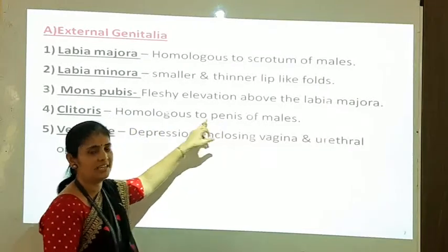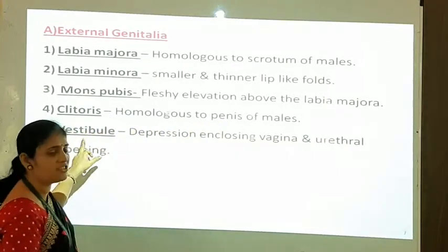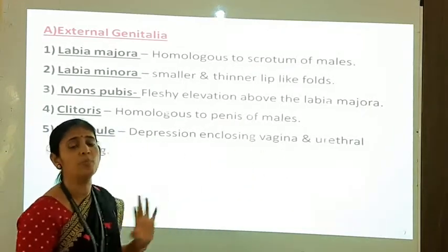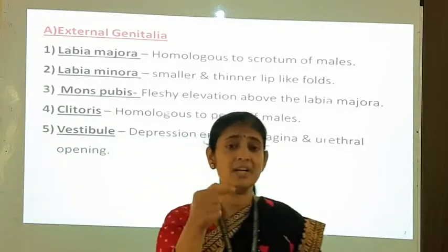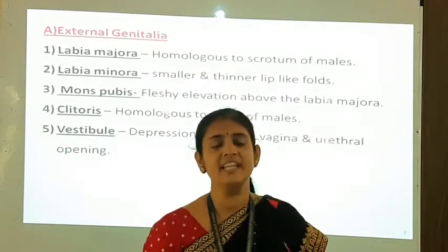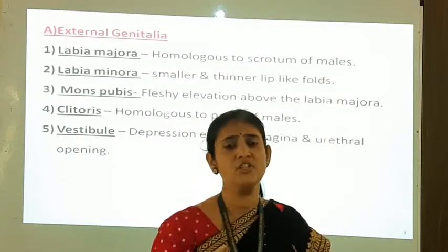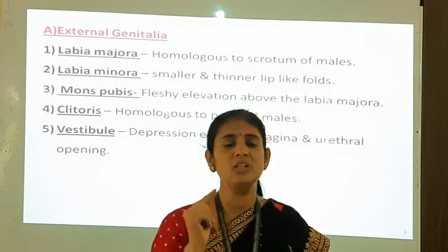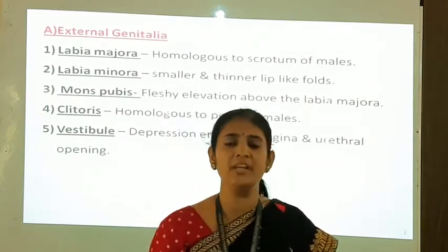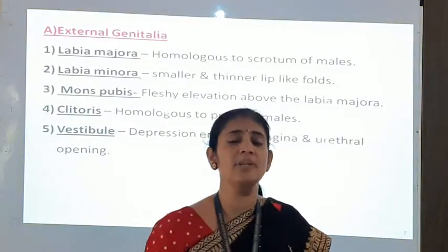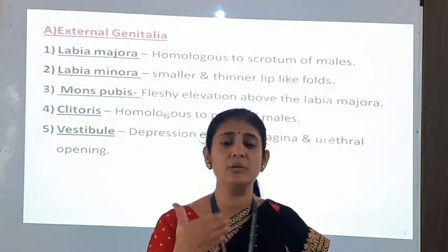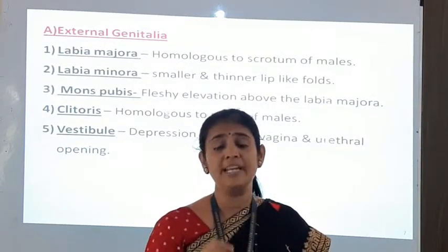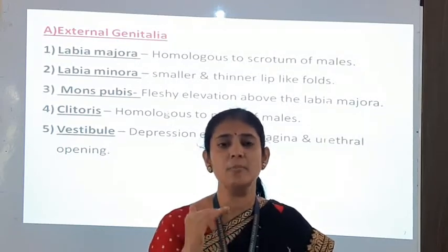Fifth is the vestibule, which is a depression enclosing the urethral and vaginal openings. The vestibule is a depression-like structure showing two openings: first, the urethral opening through which urine is excreted outside the body, and second, the vaginal opening through which bleeding occurs during the menstrual cycle.